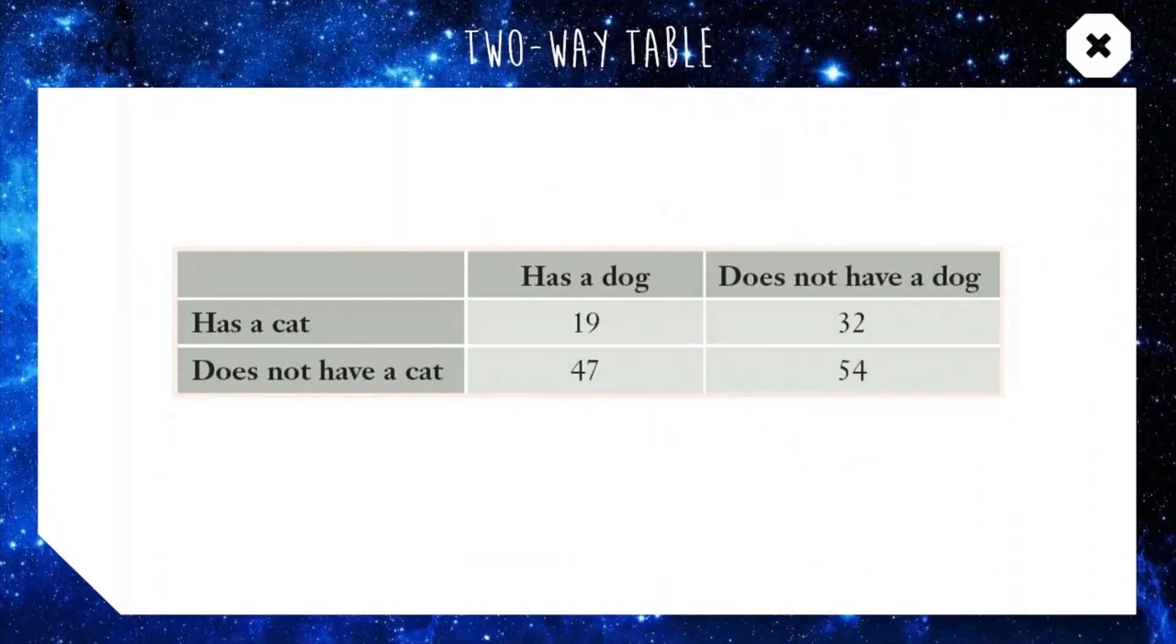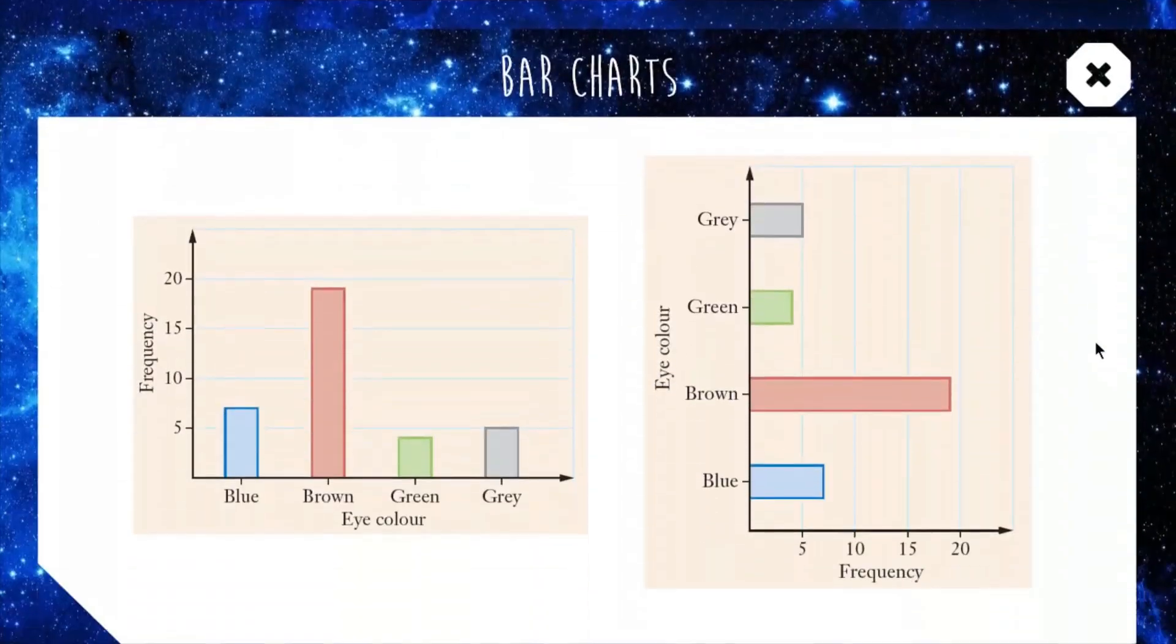Now we have two way tables, a very basic one, this is just for comparing two pieces of information, in this case it's having a dog or having a cat. So quick example, we have 19 people who have a dog and a cat, we have 47 people who have a dog but don't have a cat and so on and so forth. 54 have neither and 32 have a cat and not dog.